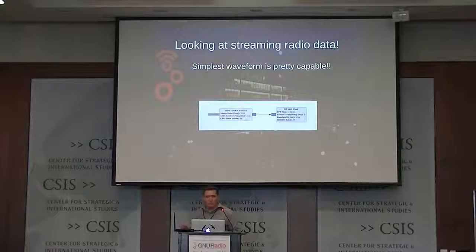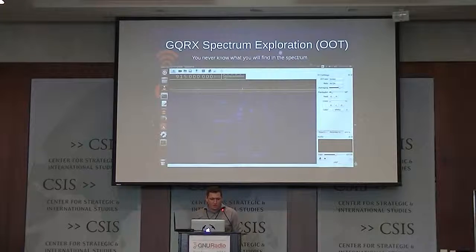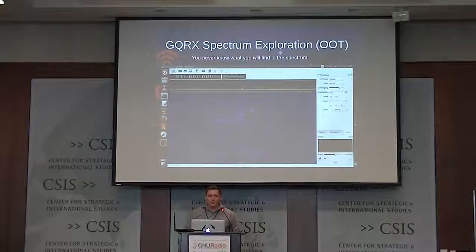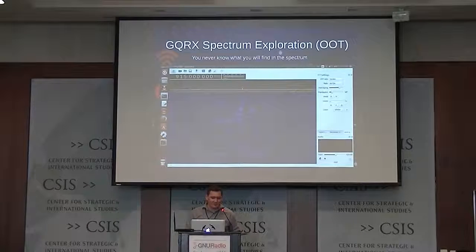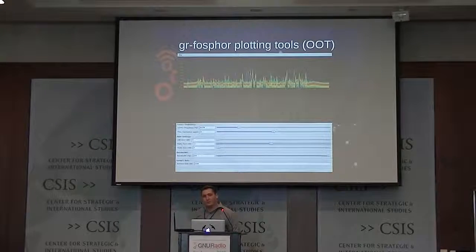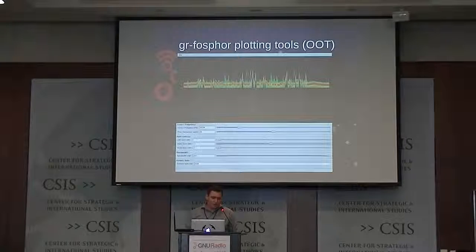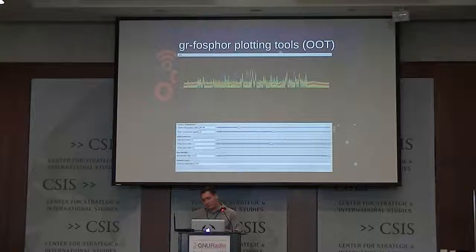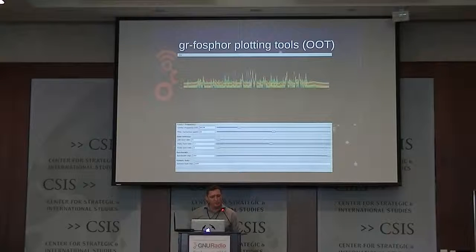QTGUI sink has a number of tabs with different displays. GQRX is another tool that provides a spectrogram and a nice interface for you to tune around and look at what's in the spectrum — certain things appear that you may not expect. And then GR Phosphor is another out-of-tree module for looking at spectrum that provides a frequency view and a spectrogram. This is a really great tool for doing rapid analysis of very short, bursty stuff because it's very good at rendering fine time resolution without dropping samples.